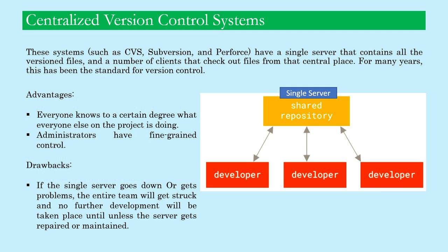As development progressed, people started to work in teams and collaborate with developers on other systems. To deal with this problem, centralized version control systems were developed. These systems have a single server that contains all versioned files and a number of clients that check out files from that central place. For many years this has been the standard for version control.